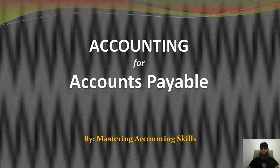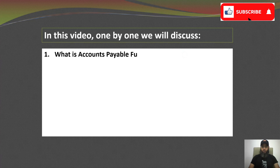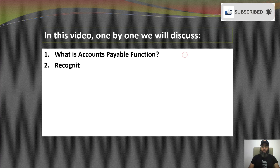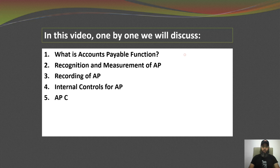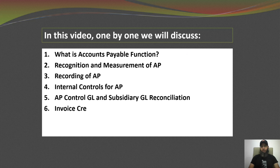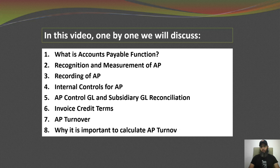In this video we will discuss, one by one: first, what is the accounts payable function; then recognition and measurement of accounts payable; then recording of accounts payable; after that, internal controls for accounts payable; then AP control general ledger and subsidiary GL accounts reconciliations; then invoice credit terms; then AP turnover; and finally, why it is important to calculate the accounts payable turnover ratio.